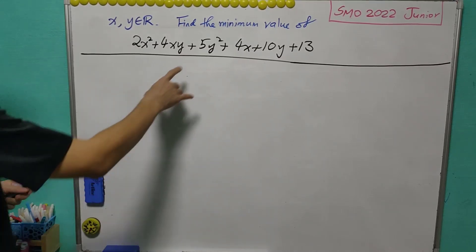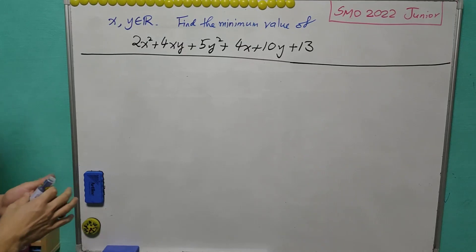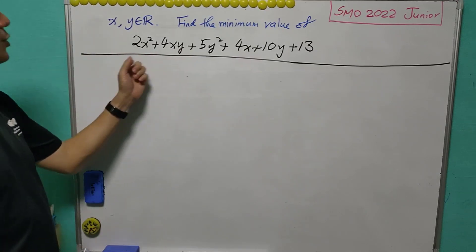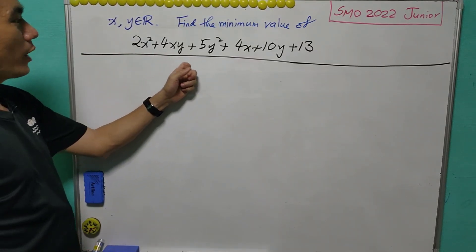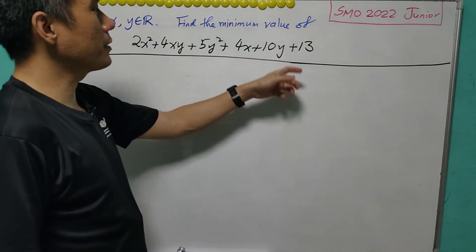For today, we are going to discuss this question from SMO 2022 junior session. Given that x, y are real numbers, we are asked to find the minimum value of this expression: 2x squared plus 4xy plus 5y squared plus 4x plus 10y plus 13.